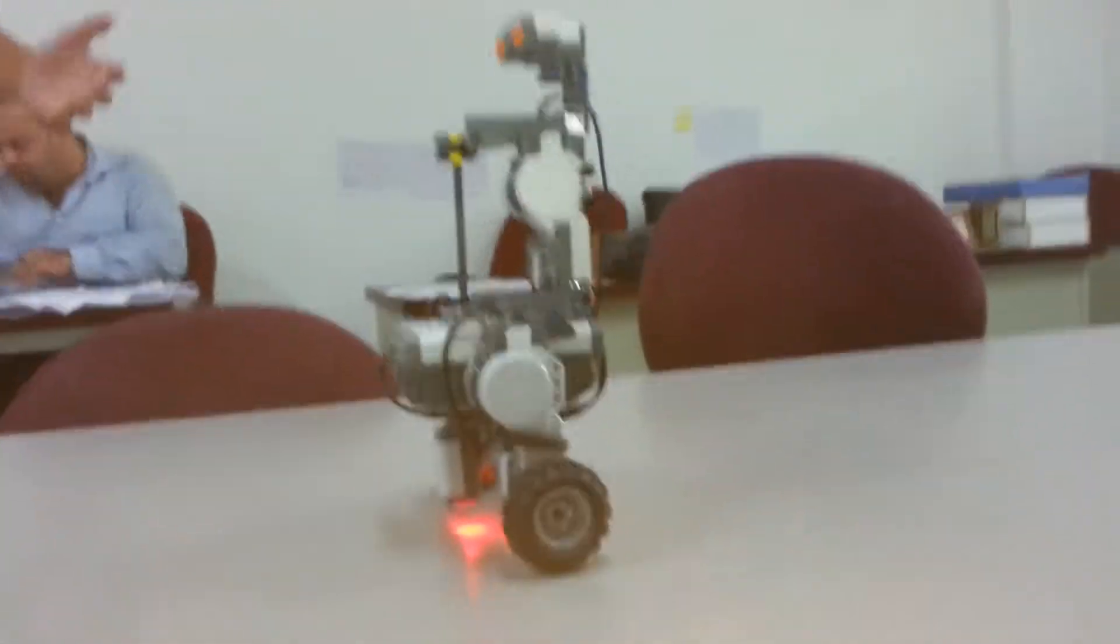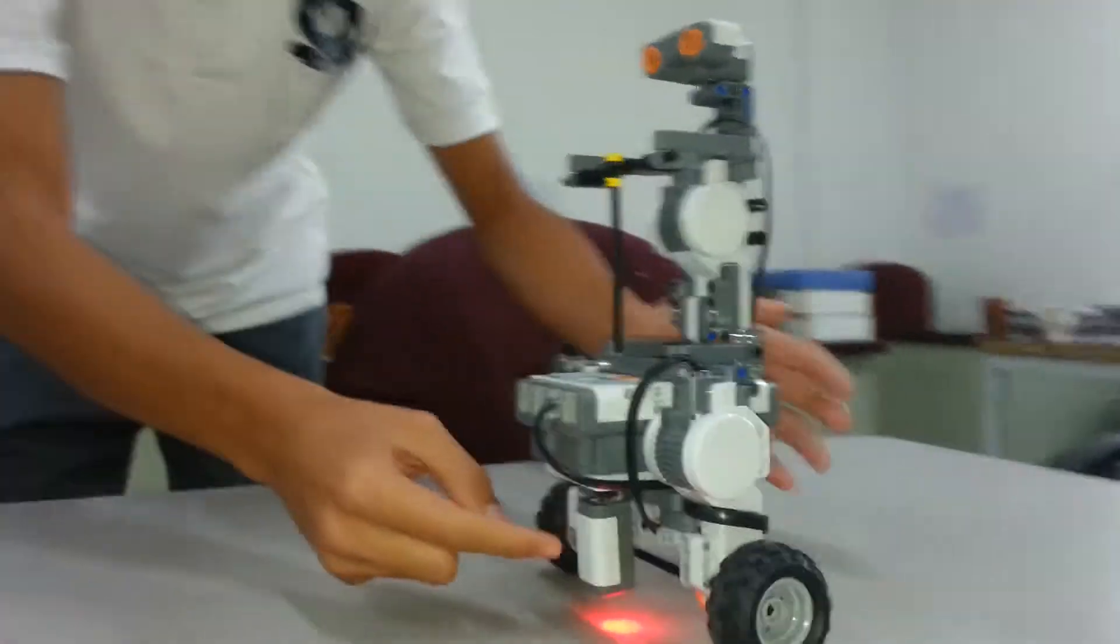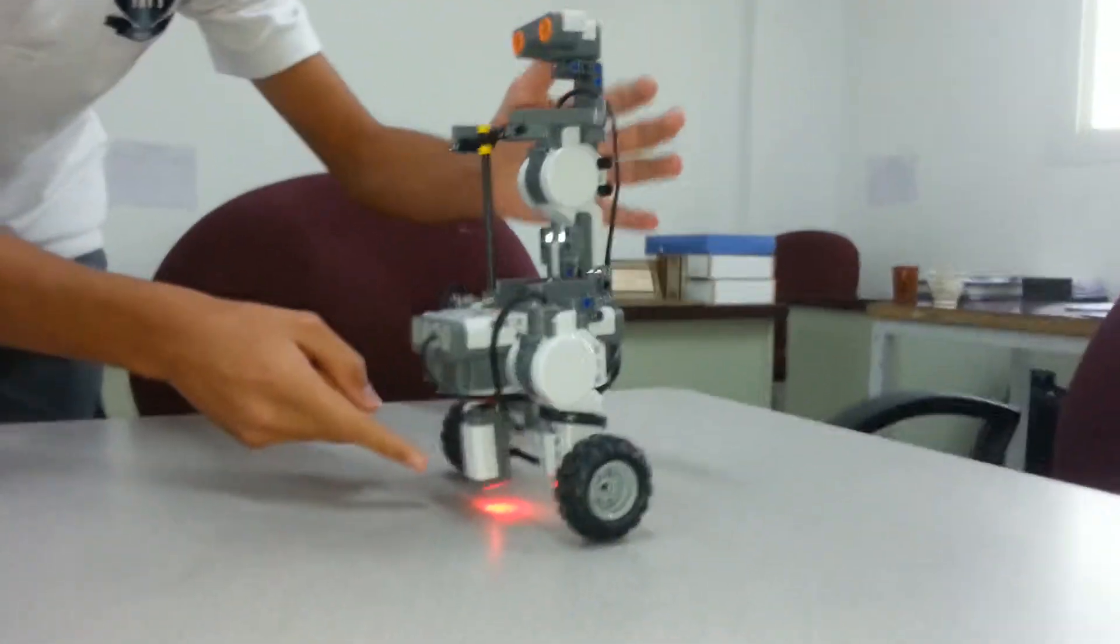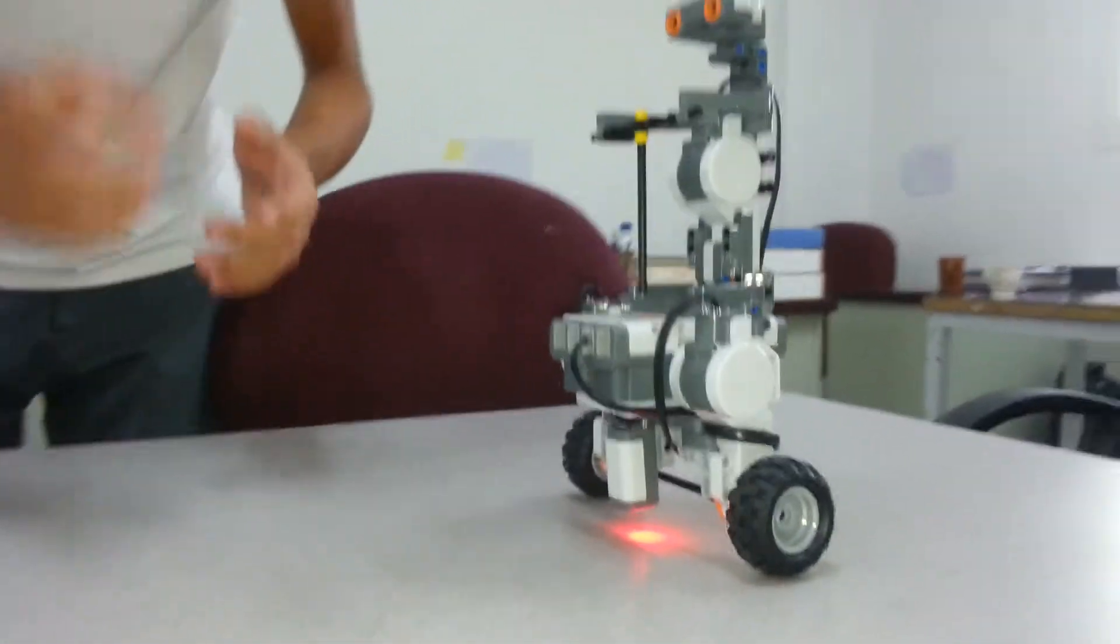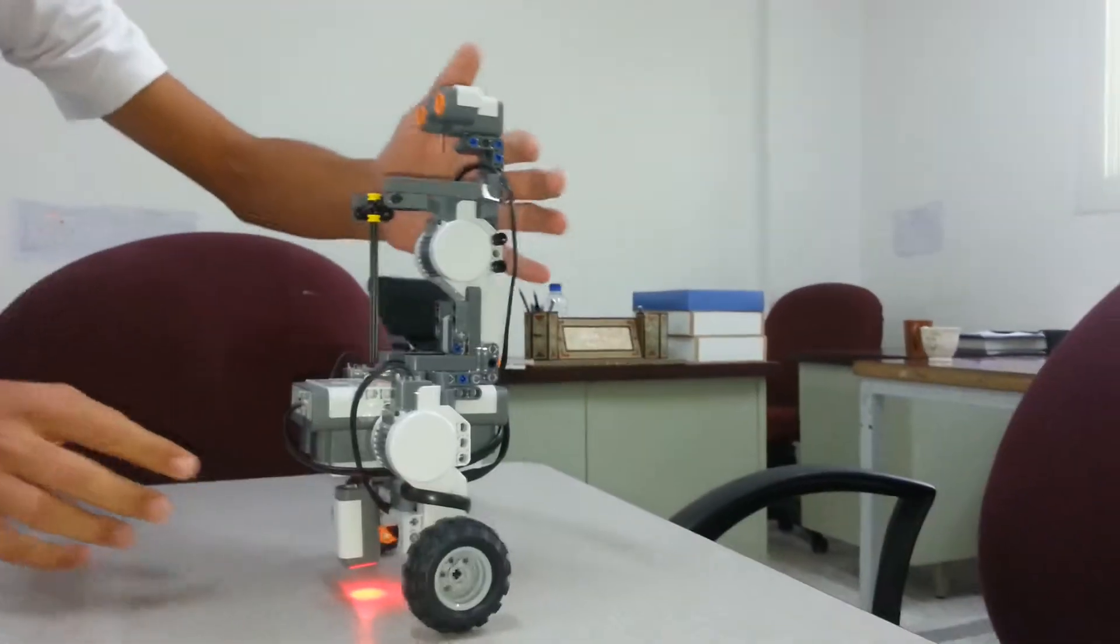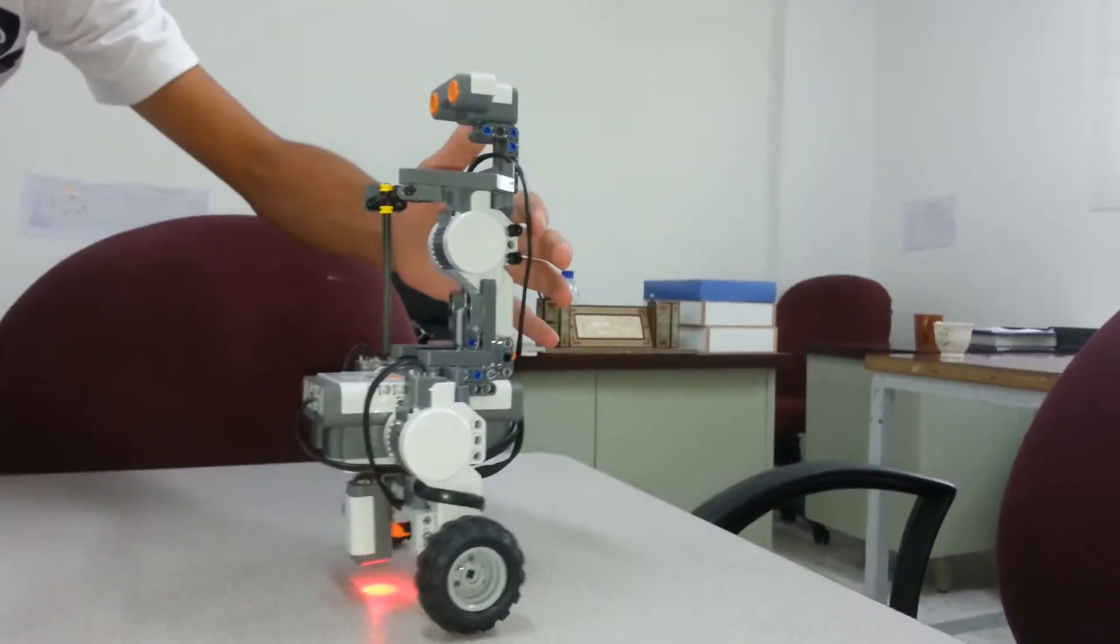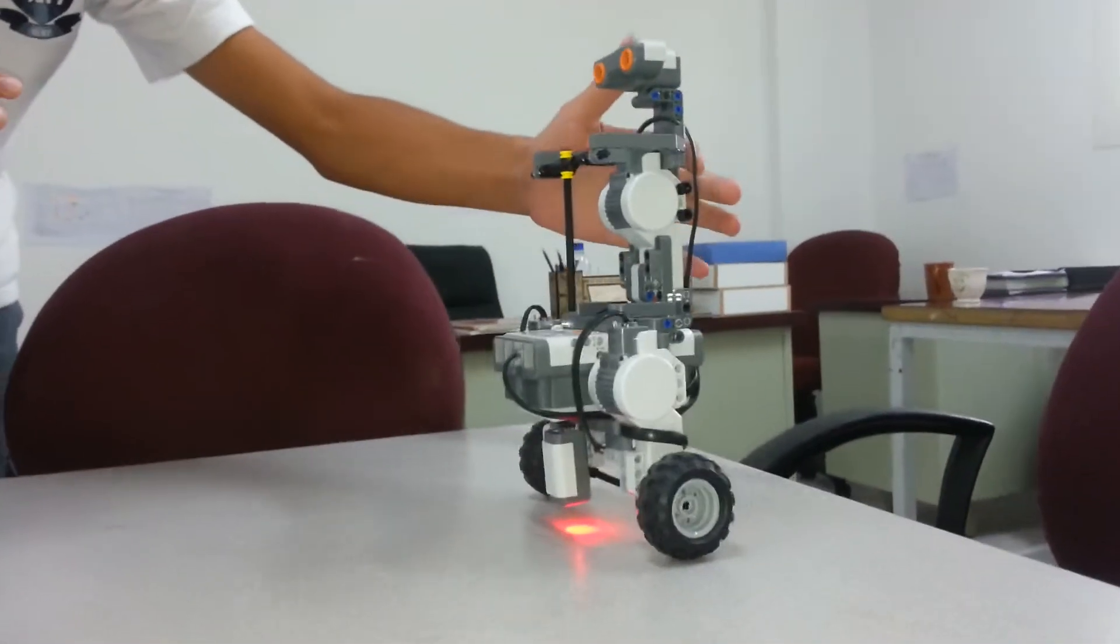What happens from the beginning is once we launch the program, it captures the light sensor over here which is turned on in red color. It captures the distance between the light sensor and the surface underneath, and it tries to maintain the distance it has captured to balance the robot.